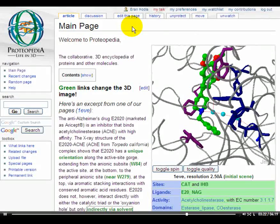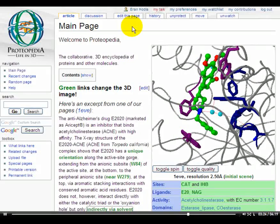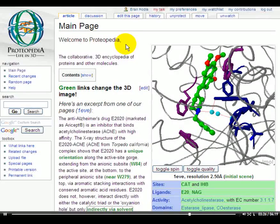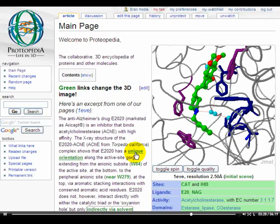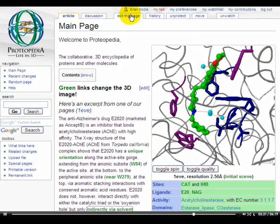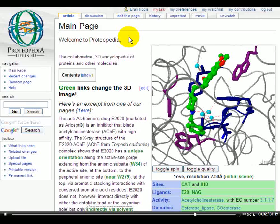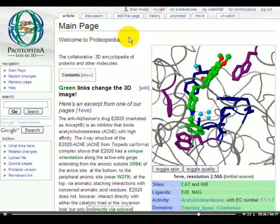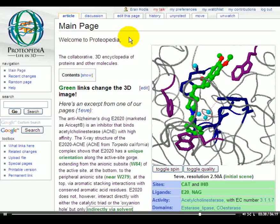Having clicked on edit this page, the user creating a green link would manipulate the three-dimensional structure into a particular orientation, coloring scheme, and representation scheme, then save that visual combination as a green link scene. All the animation is taken care of behind the scenes by the software.